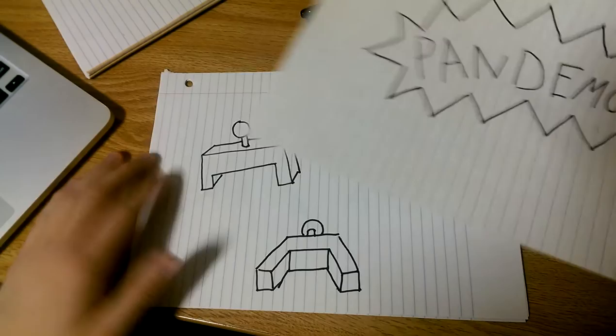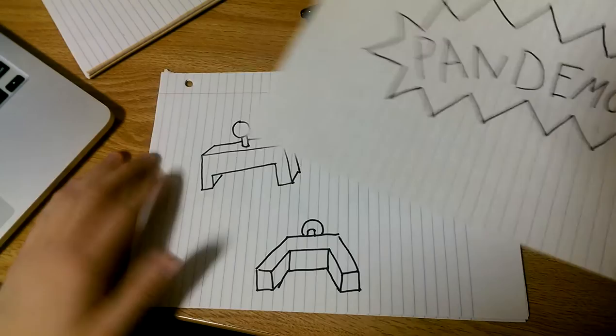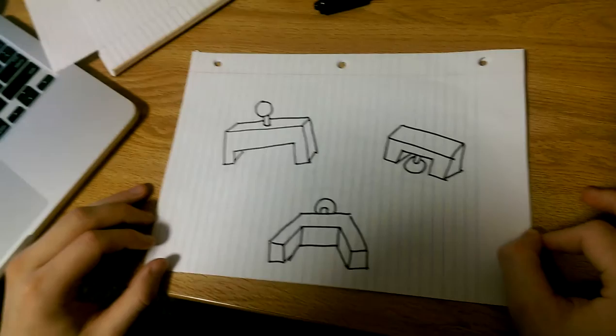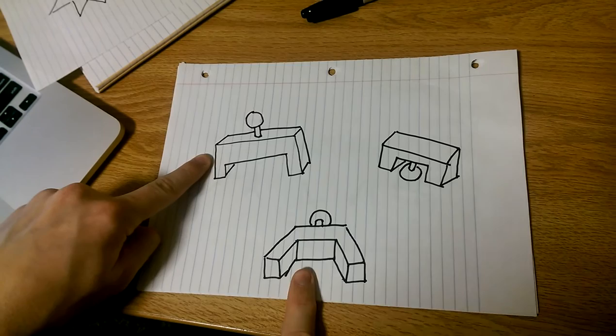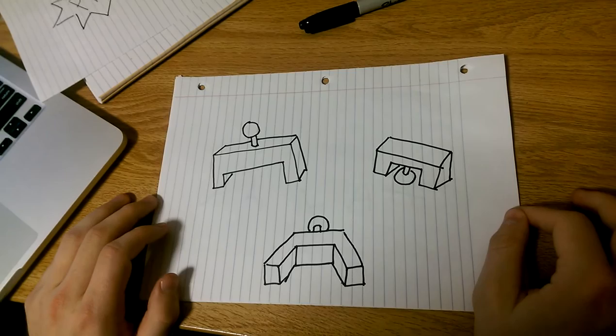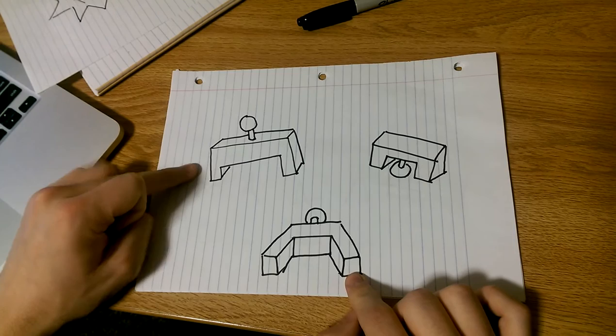So first we're going to take a look at these images. As humans we can tell that this and this are the same shapes and that this one is distinct from both of the other ones. It's a bit of a psychological mystery what allows us to group these objects together even though these two are drawn in different ways from different perspectives. We can tell that they are clearly more similar than this one.